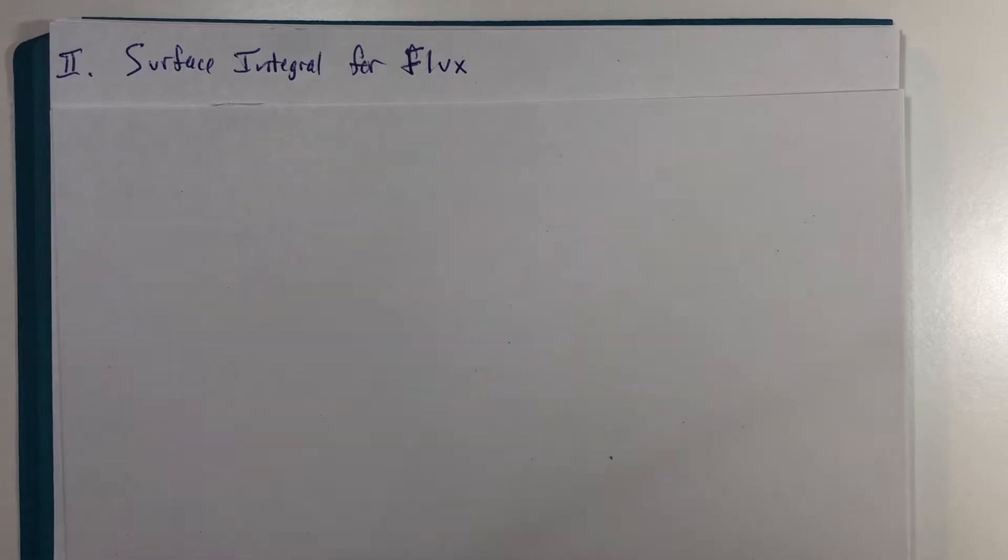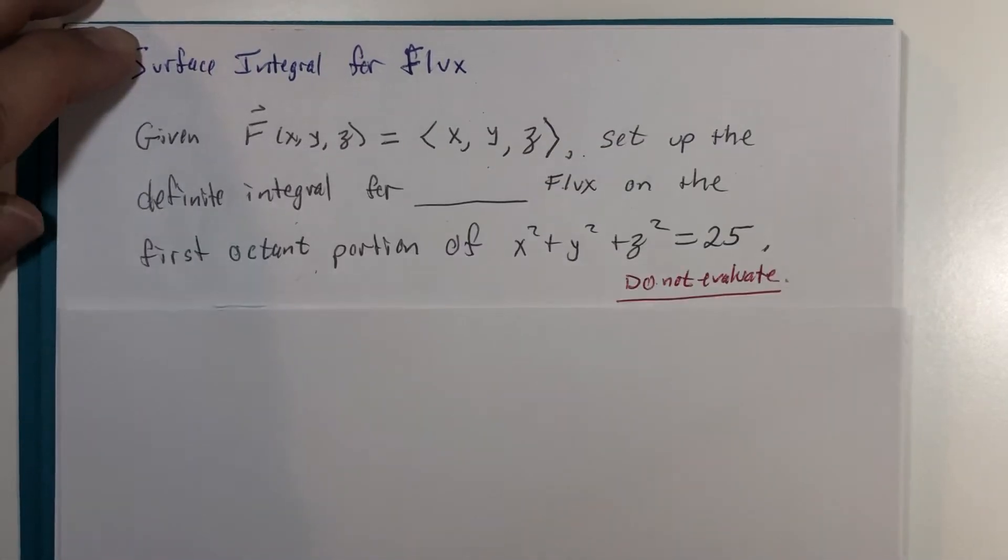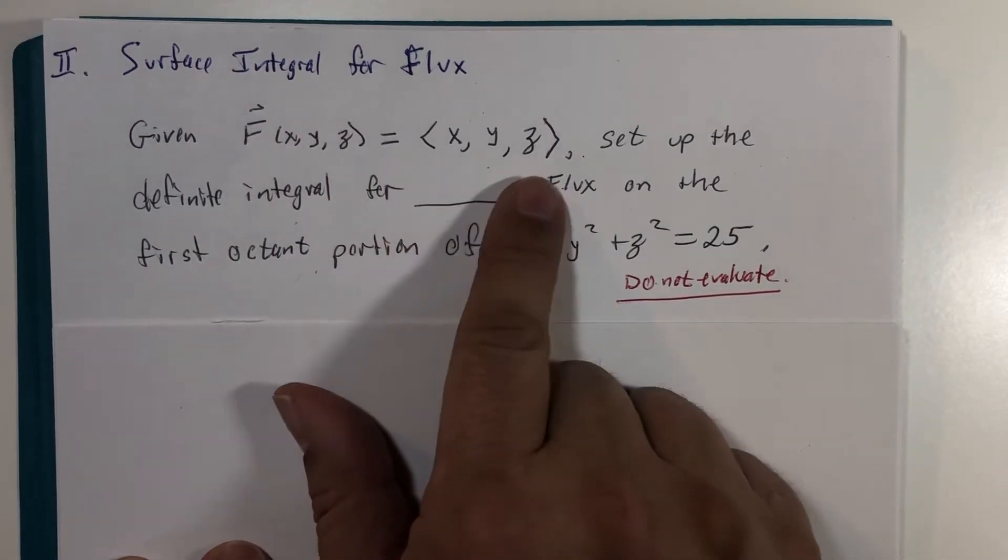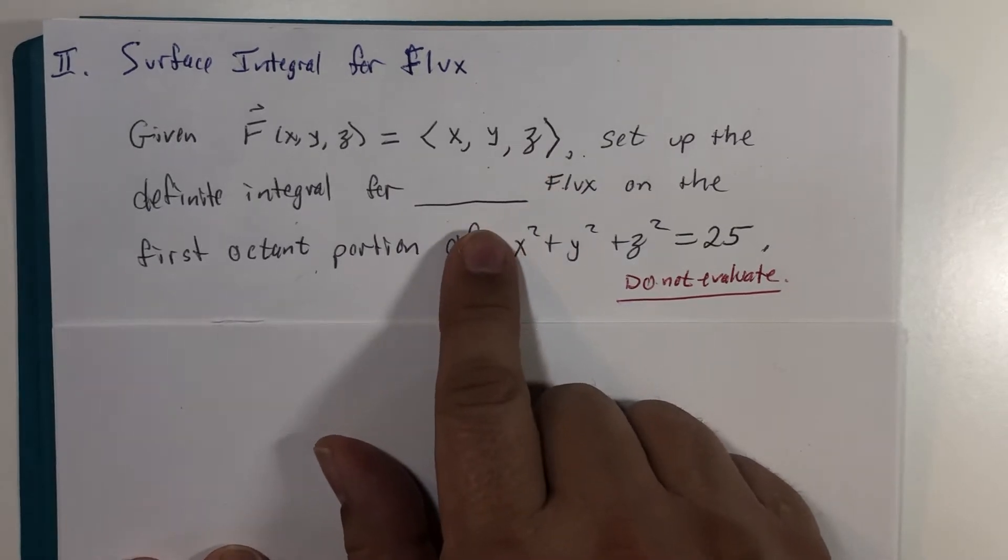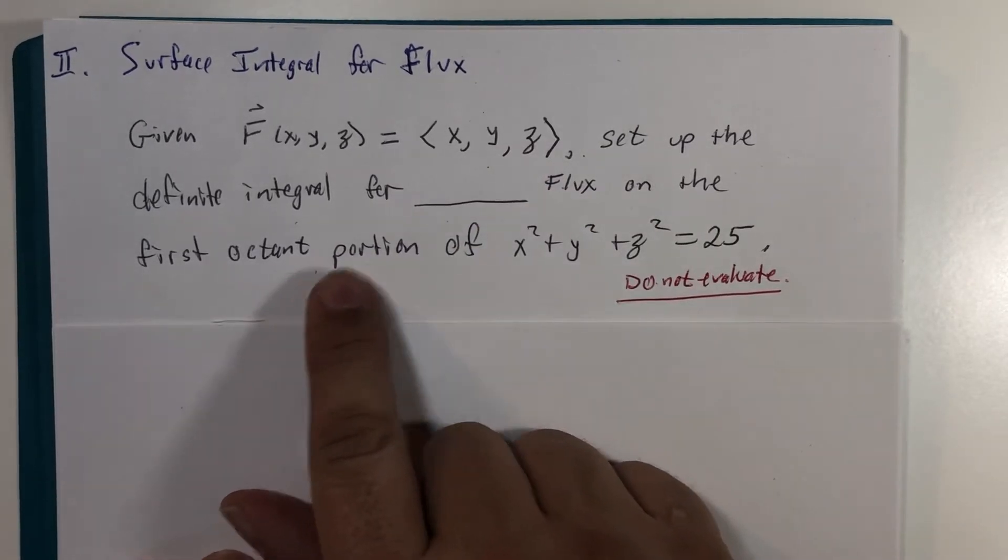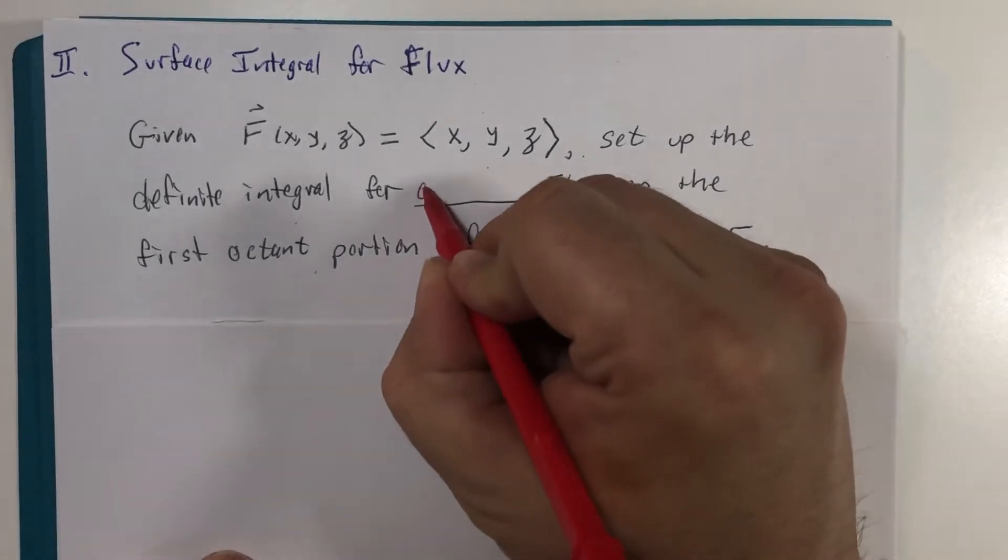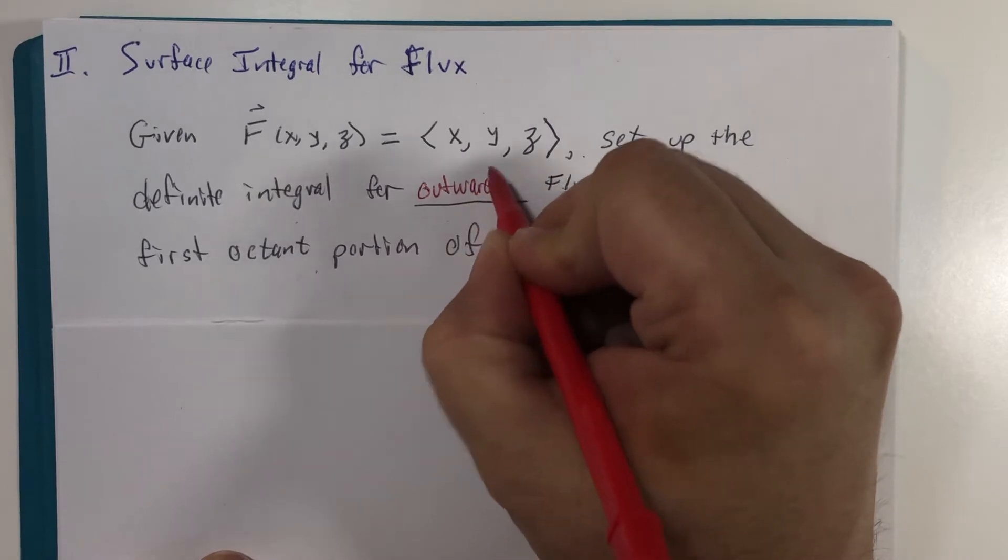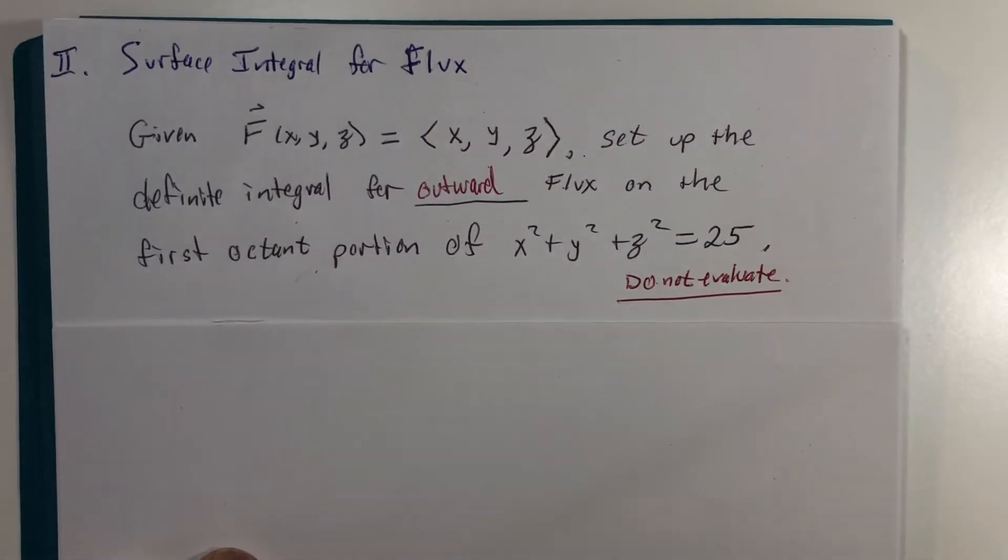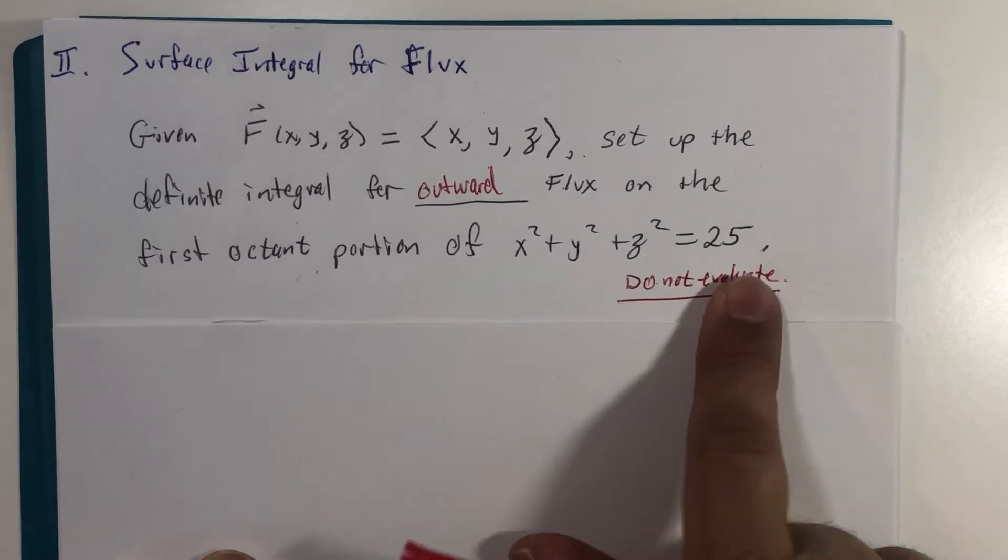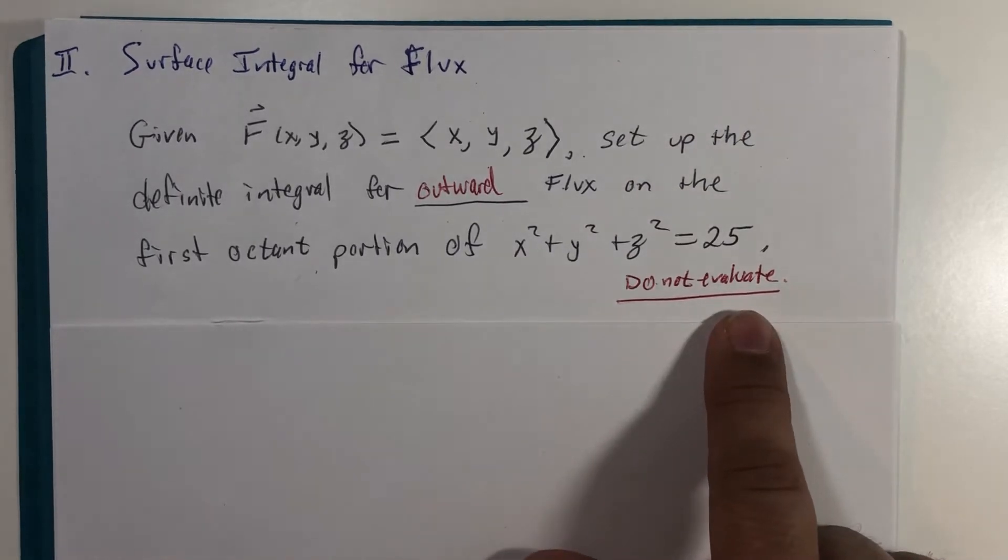Let me show you what we're here after. We're trying to learn how to calculate this concept of a vector field passing through a surface. I've got a problem ready to go: a simple vector field F(x,y,z) = <x,y,z>, and we're going to set up the definite integral expression for flux. In some books they call it the outward flux, and we're looking at the first octant portion of a sphere radius 5. We're not going to evaluate it.